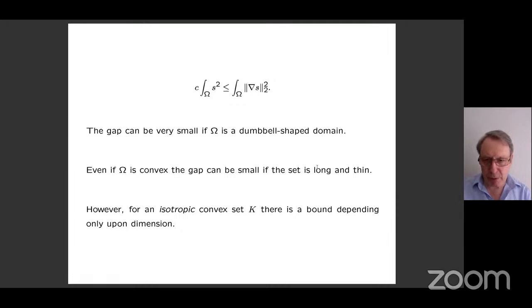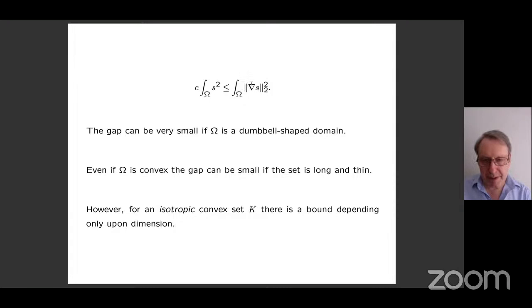Even if omega is convex, the constant could still be very small if the set is long and thin — the function can change from minus one to one by varying only very slowly along the set, so the gradient is non-zero everywhere but very small. However, an isotropic convex set has been transformed so it is more or less the same in all directions and cannot be long and thin. For such a set, there is a bound for the spectral gap depending only on the dimension.